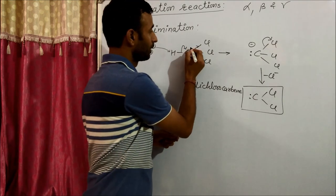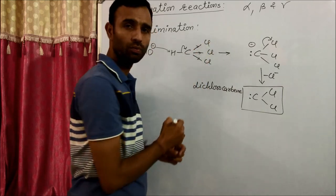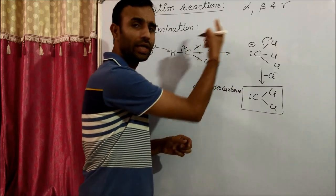Actually, the carbon which is attached to the leaving group—the main leaving group is chlorine here—that carbon is known as the alpha carbon.